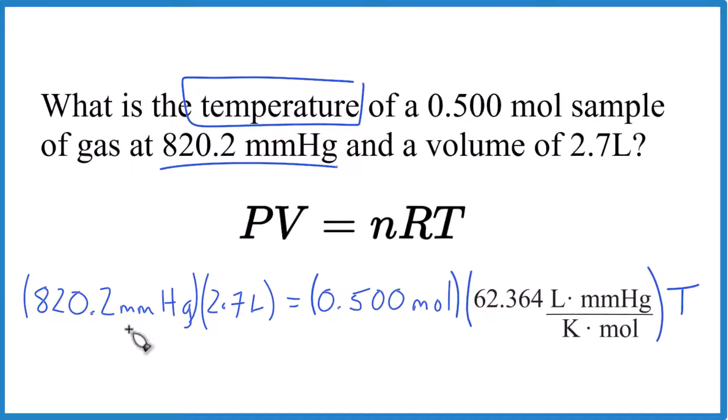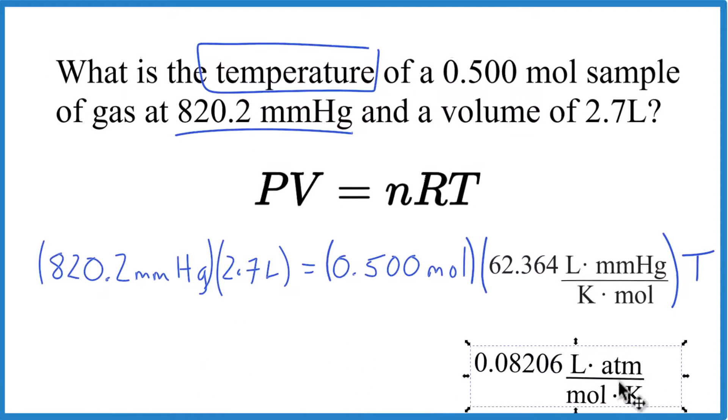If you didn't have millimeters of mercury, you would probably have to convert this to atmospheres so you could use a constant that you might be more familiar with. It has atmospheres in it. So in this one we're going to use millimeters of mercury, but you could convert this to atmospheres and use this value of r if you were more familiar with that.